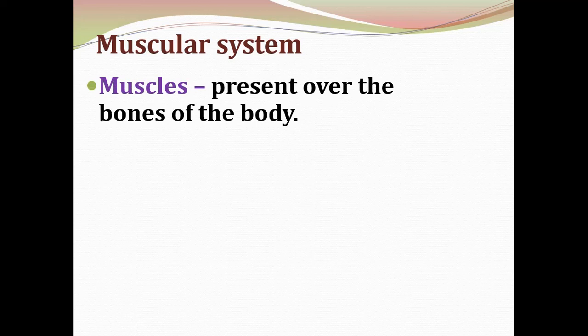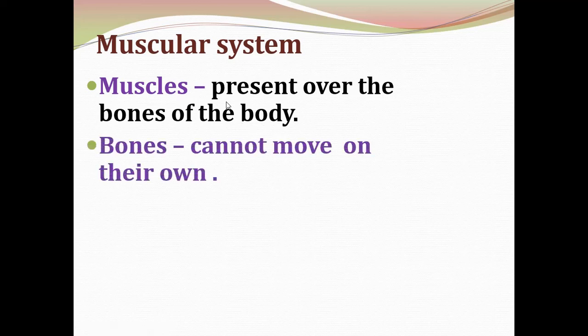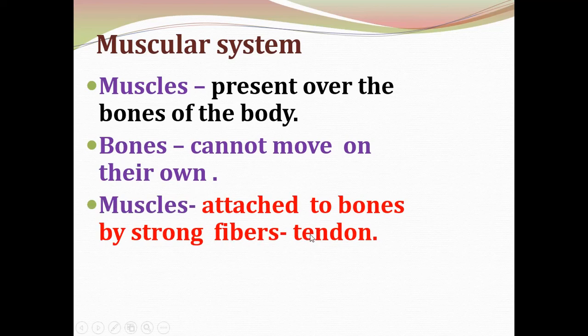Muscles are present over the bones of the body. Bones cannot move on their own. The human skeletal system and muscular system are responsible for the movement of our body parts. Muscles are attached to bones by strong fibers called tendons.